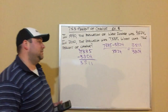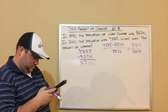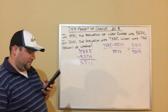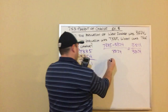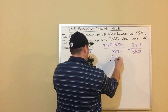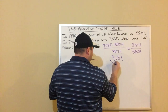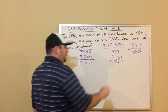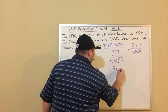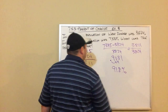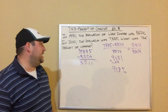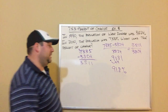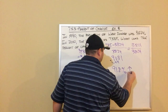So we've got 3,511 divided by 3,824. I do that math and end up with 0.9181. I move my decimal two places to the right, just like the other examples, and rounding to the nearest tenth I end up with 91.8 percent.